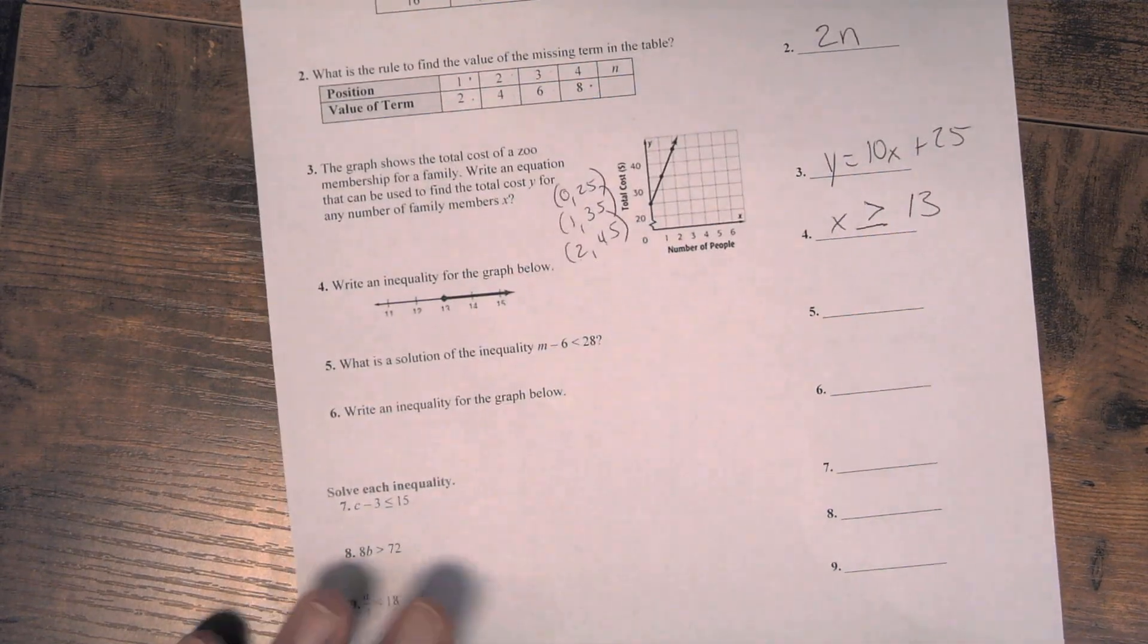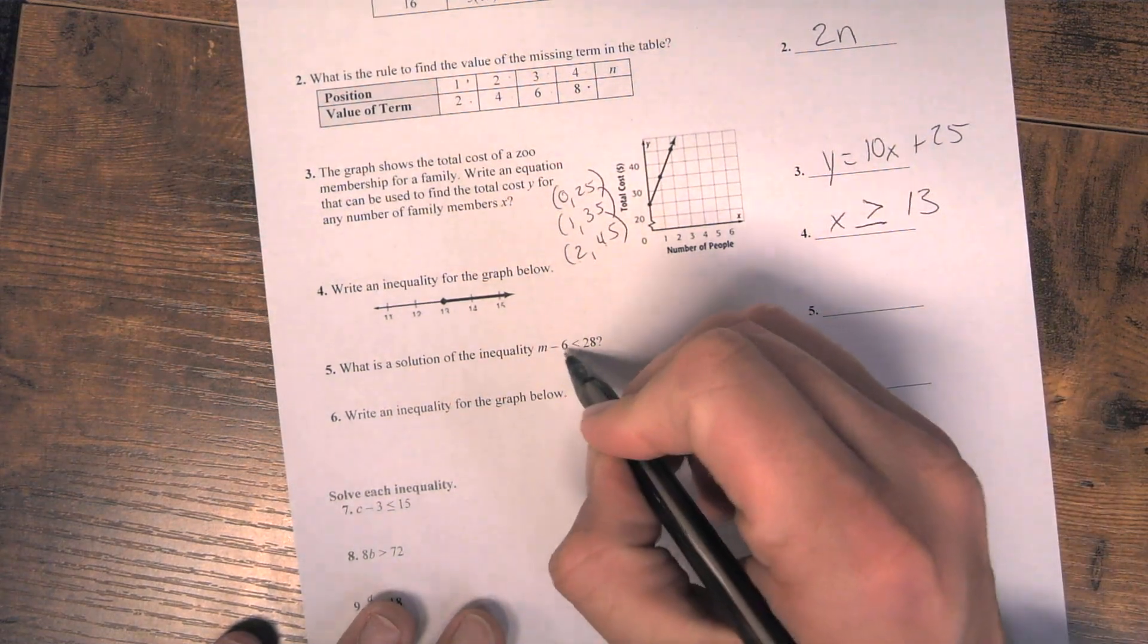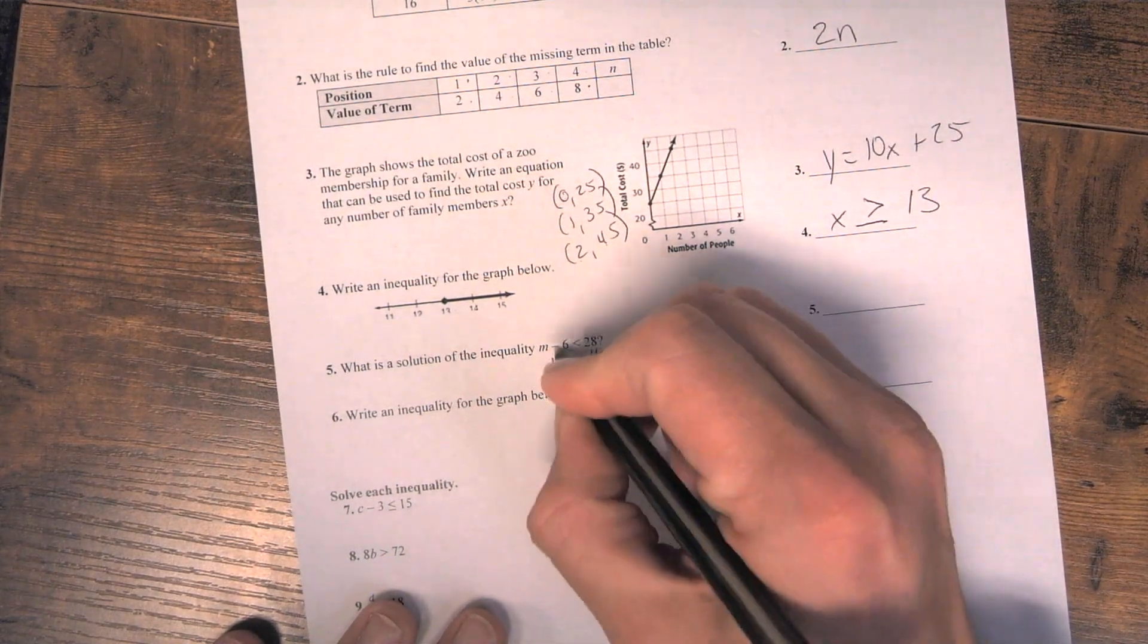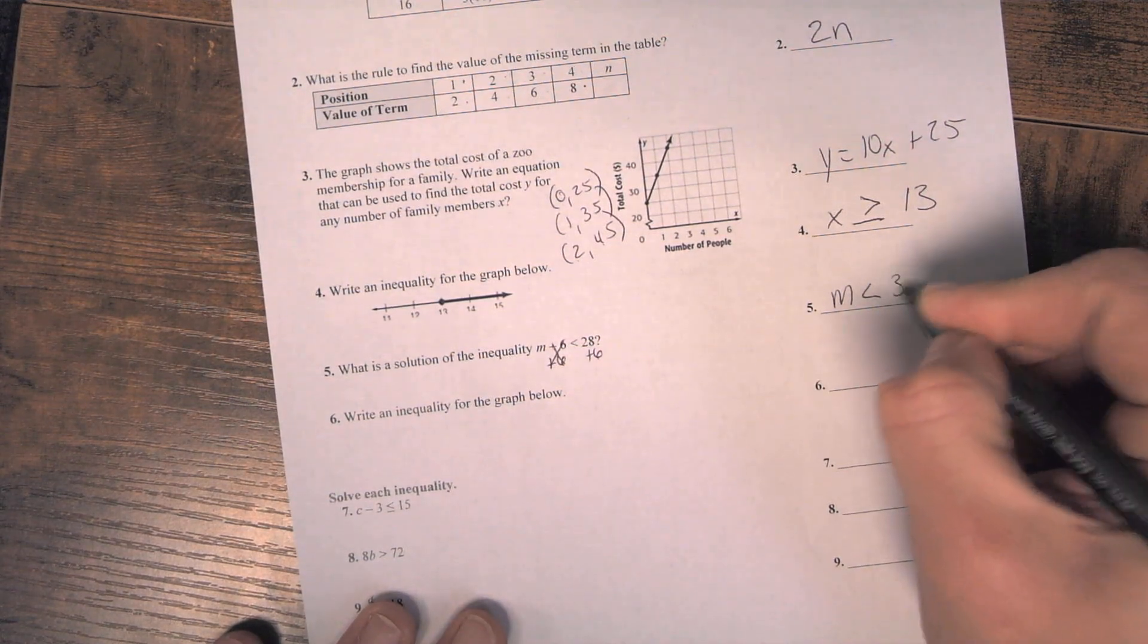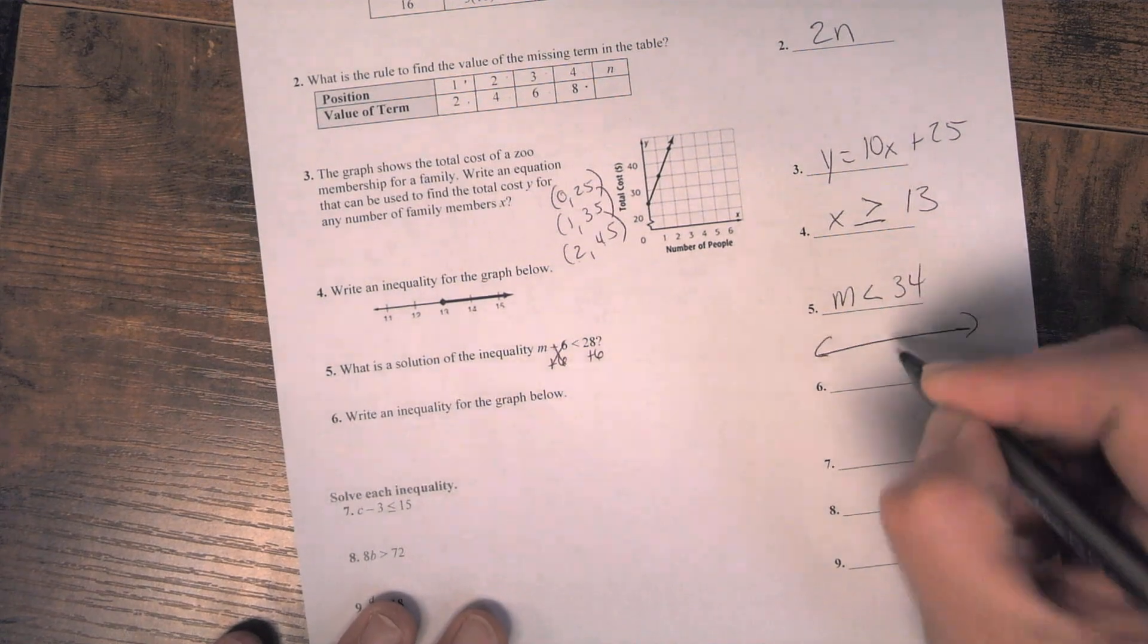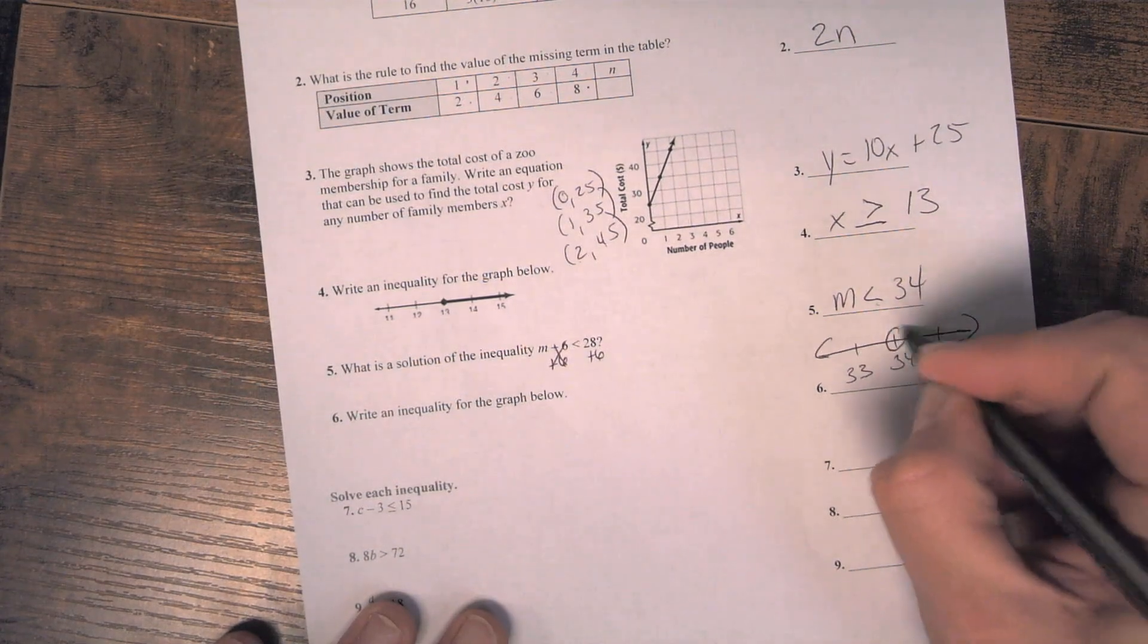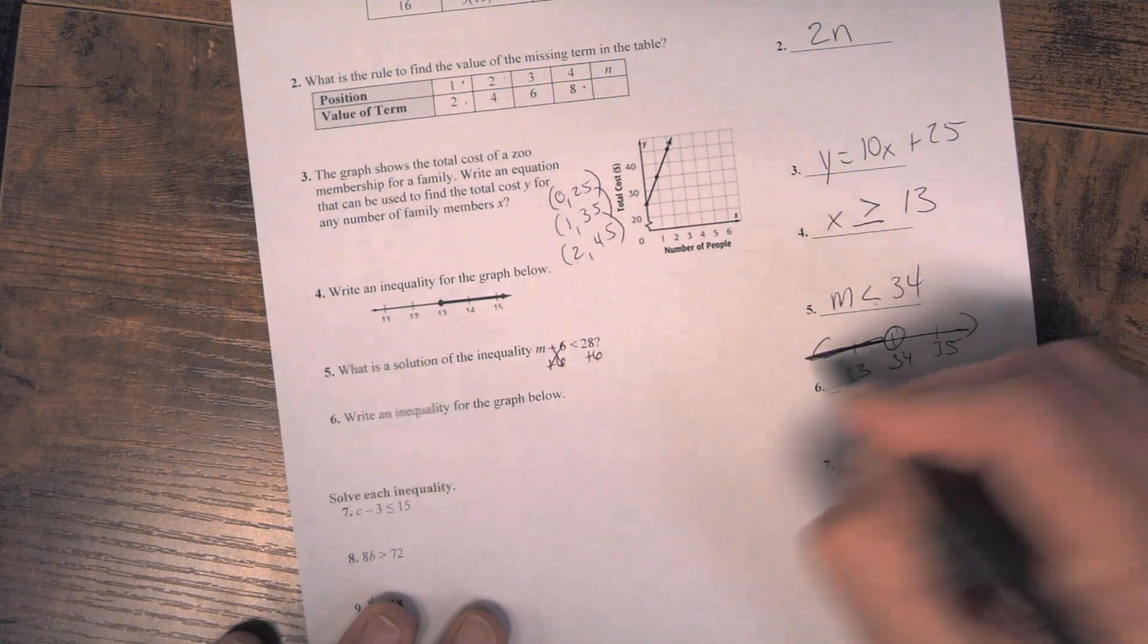Number 5 and 6 go together. 5, you are solving the inequality. So since it's subtraction, just like an equation, you do the opposite of what's there. So we're going to add 6 to each side. So m is less than 34. So number 6, they want us to graph this. Since it's this symbol, it's a circle right on the number line. And since it's less than, we go to the left.